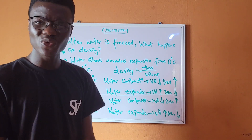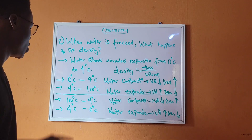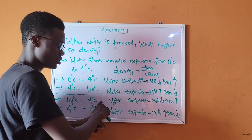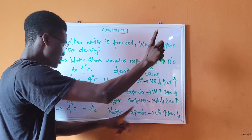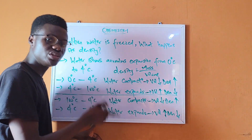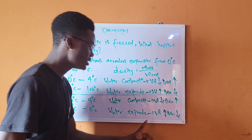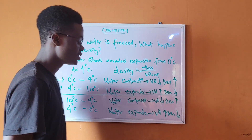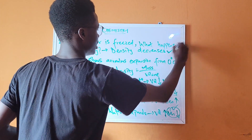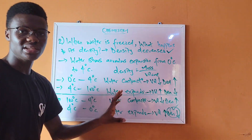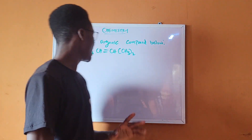Applying this to the question — when water is frozen, from 100°C to 4°C water contracts, volume decreases, density increases. Then from 4°C to 0°C water expands, volume increases, and density decreases. So the correct answer is that the density decreases at the final stage of freezing.